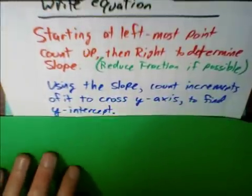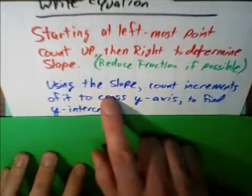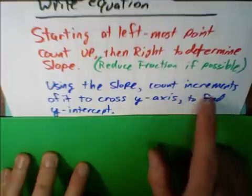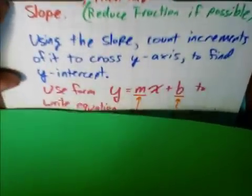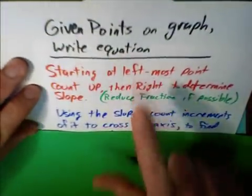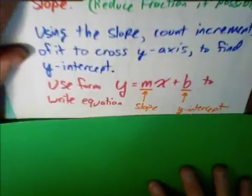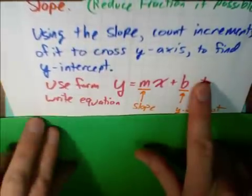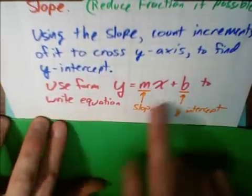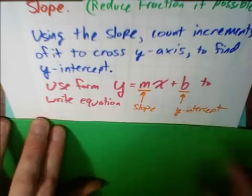Next, we're going to use this slope. We're going to count increments of it to cross the y-axis. This will give us the y-intercept. Lastly, now that we have the slope and the y-intercept, we're going to use the form y equals mx plus b to write the equation. m is the slope and b is the y-intercept.